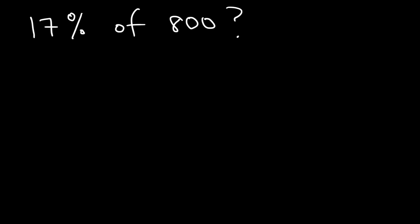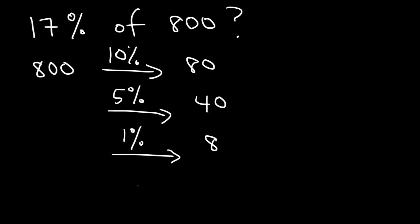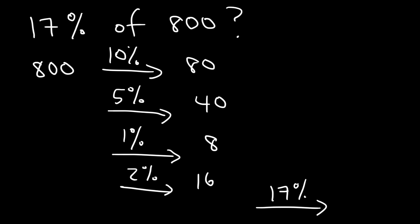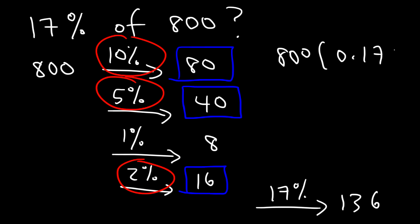Here's another one. What is 17% of 800? Let's start with 10% of 800, which is 80. 5% is half of 10%, so that's 40. 1% of 800 is 8, so 2% is 2 times 8, which is 16. To get 17%, I add 10 plus 5 plus 2, which equals 17. So I add 80 plus 40, which is 120, and 120 plus 16 is 136. So 17% of 800 is 136. 800 times 0.17 is indeed 136.